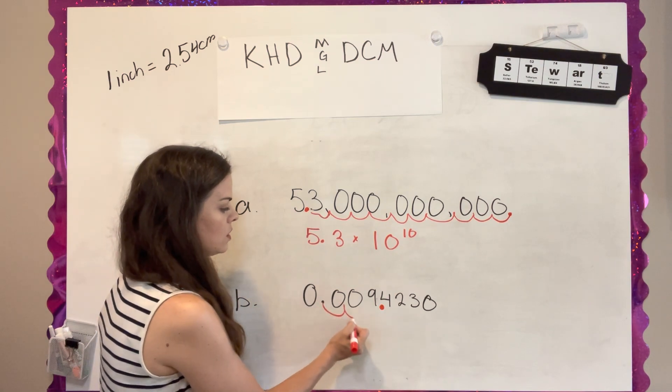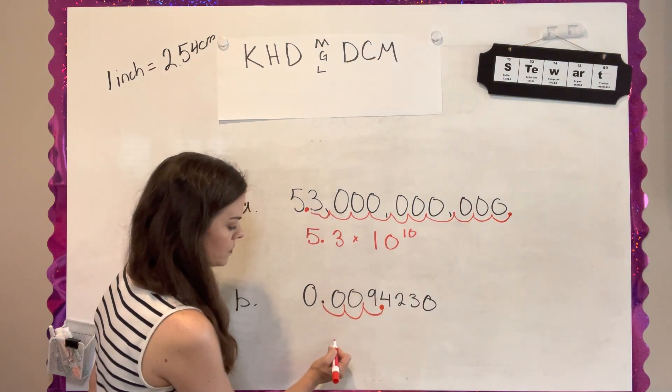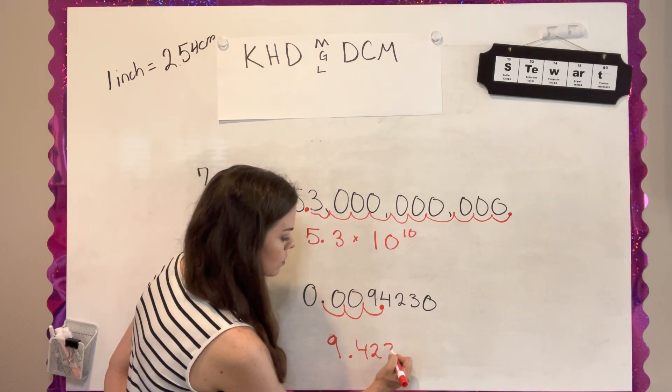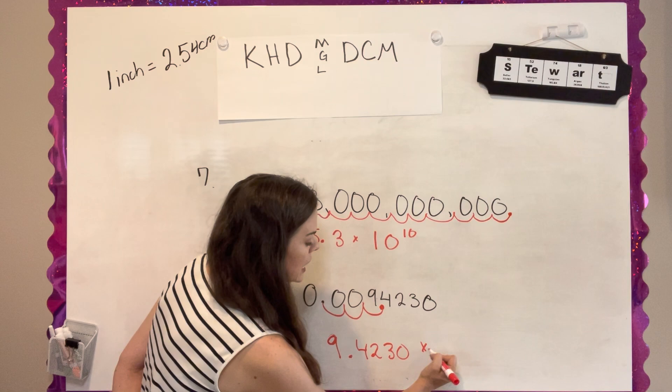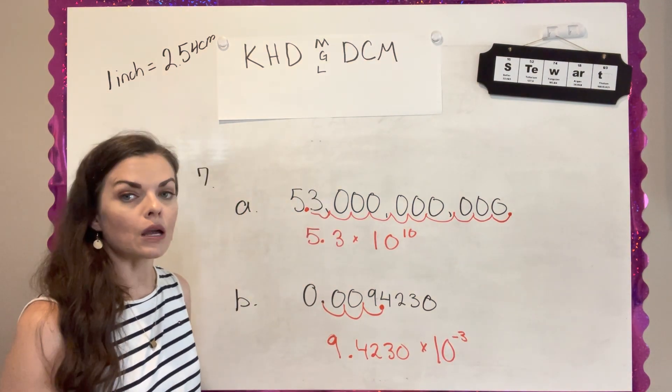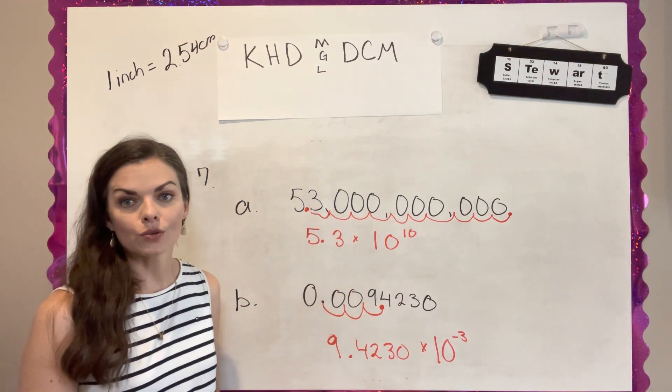So I want one number to the left of the decimal. So I have to move this 1, 2, 3. So it's going to be 9.4230 times 10 to the negative third. The reason it's negative is I moved the decimal in the other direction.